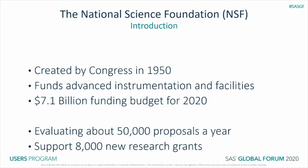They fund advanced instrumentation and facilities, including posts in Antarctica and other national research laboratories. As researchers ourselves, we are familiar with the time, dedication, and hard work required to not just study a topic, but also to find relevant studies to build upon — which led us to investigate the NSF data to find out how research gets funded. They evaluate about 50,000 proposals each year, with the 2020 funding budget being 7.1 billion dollars.